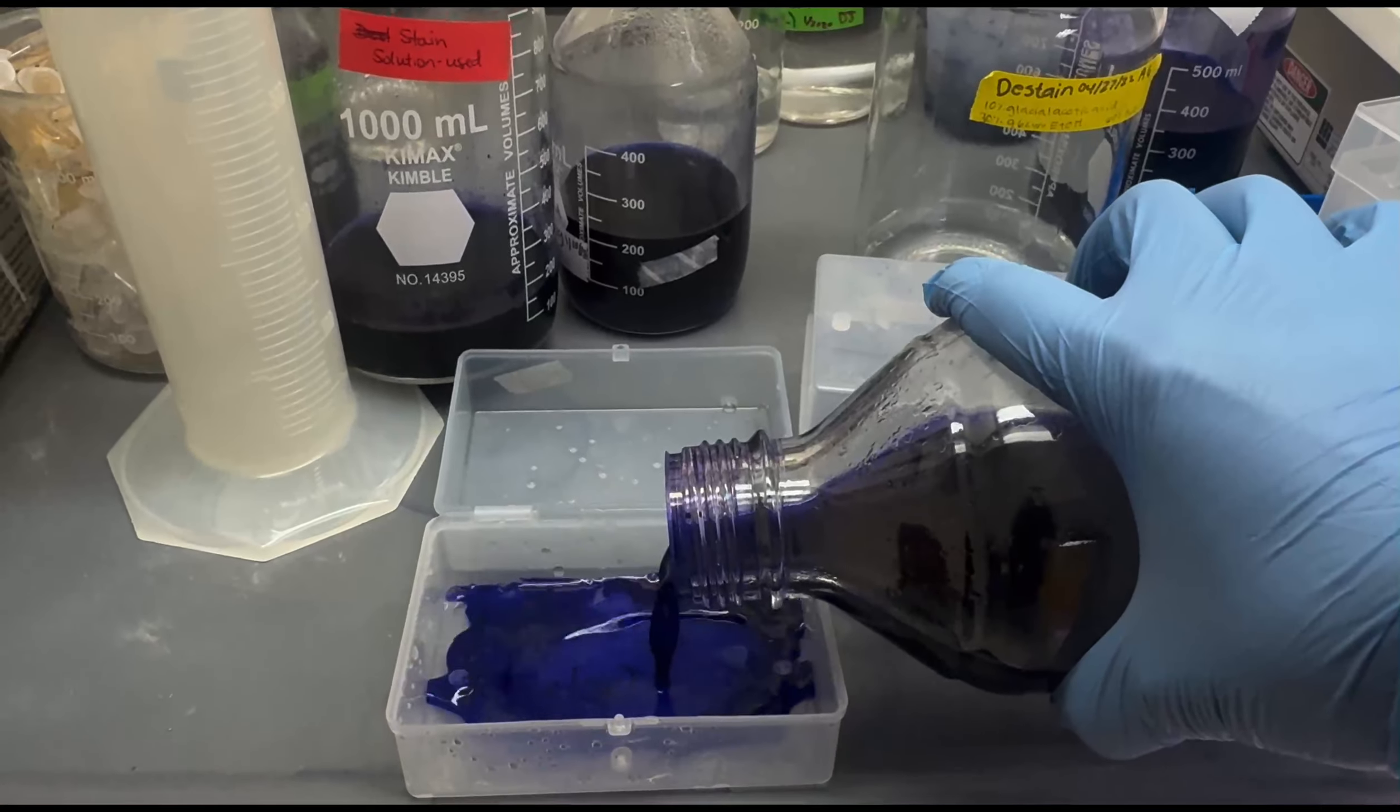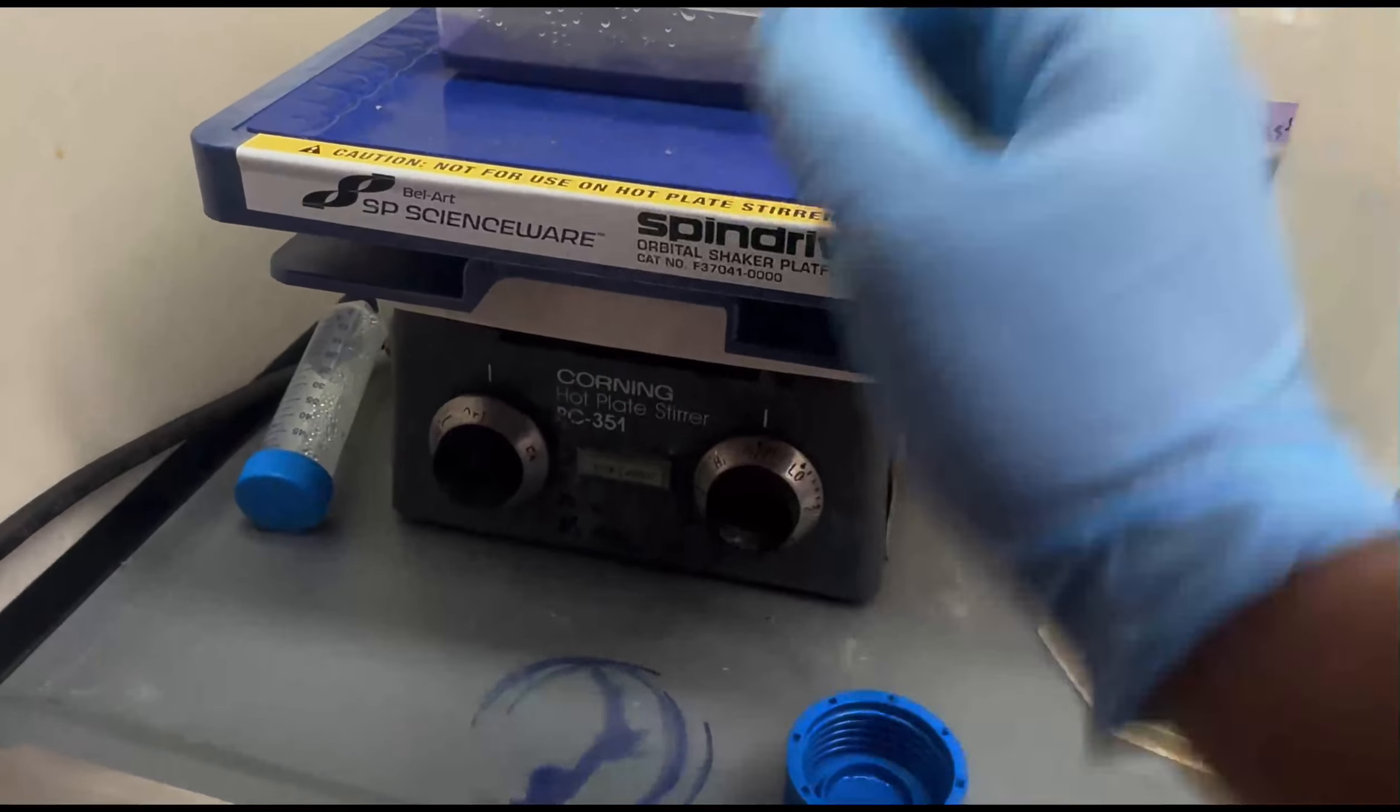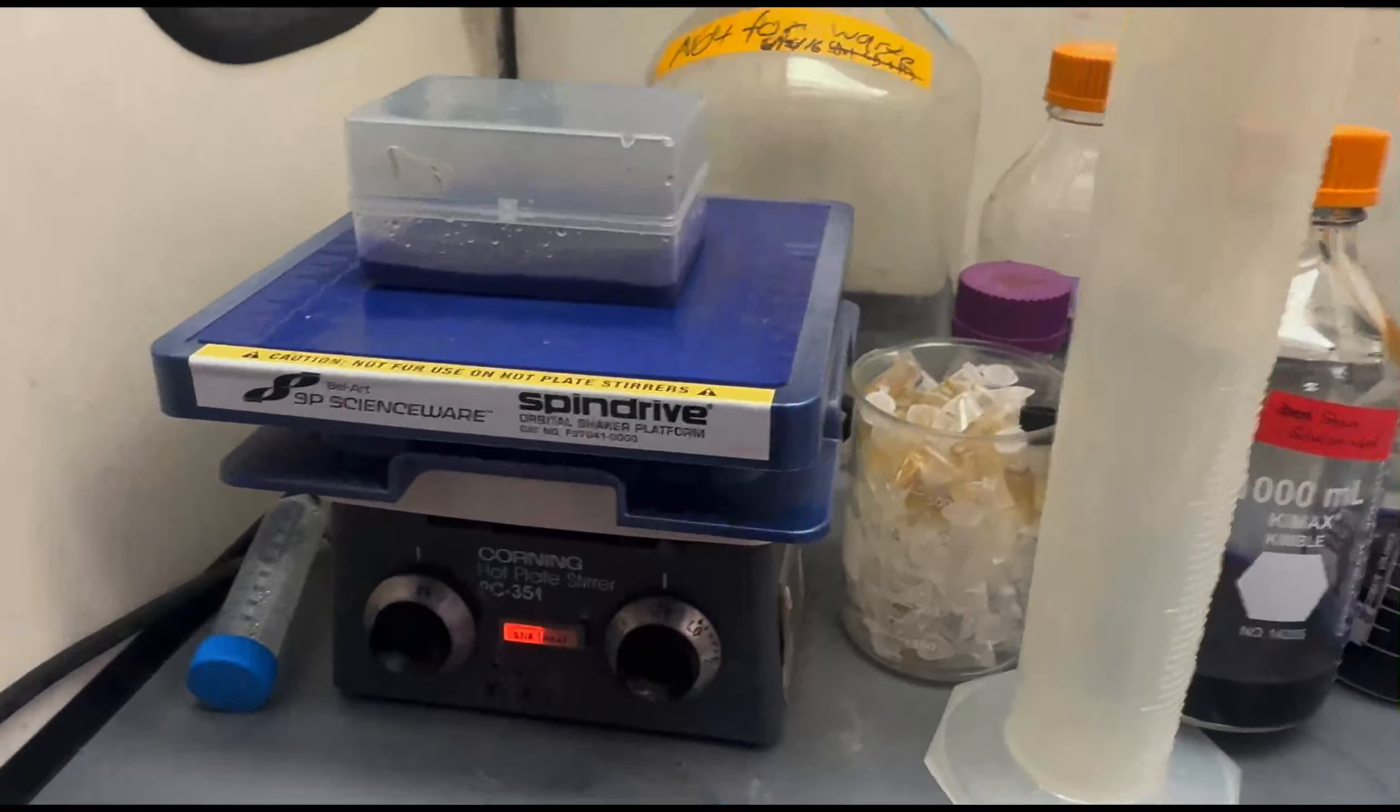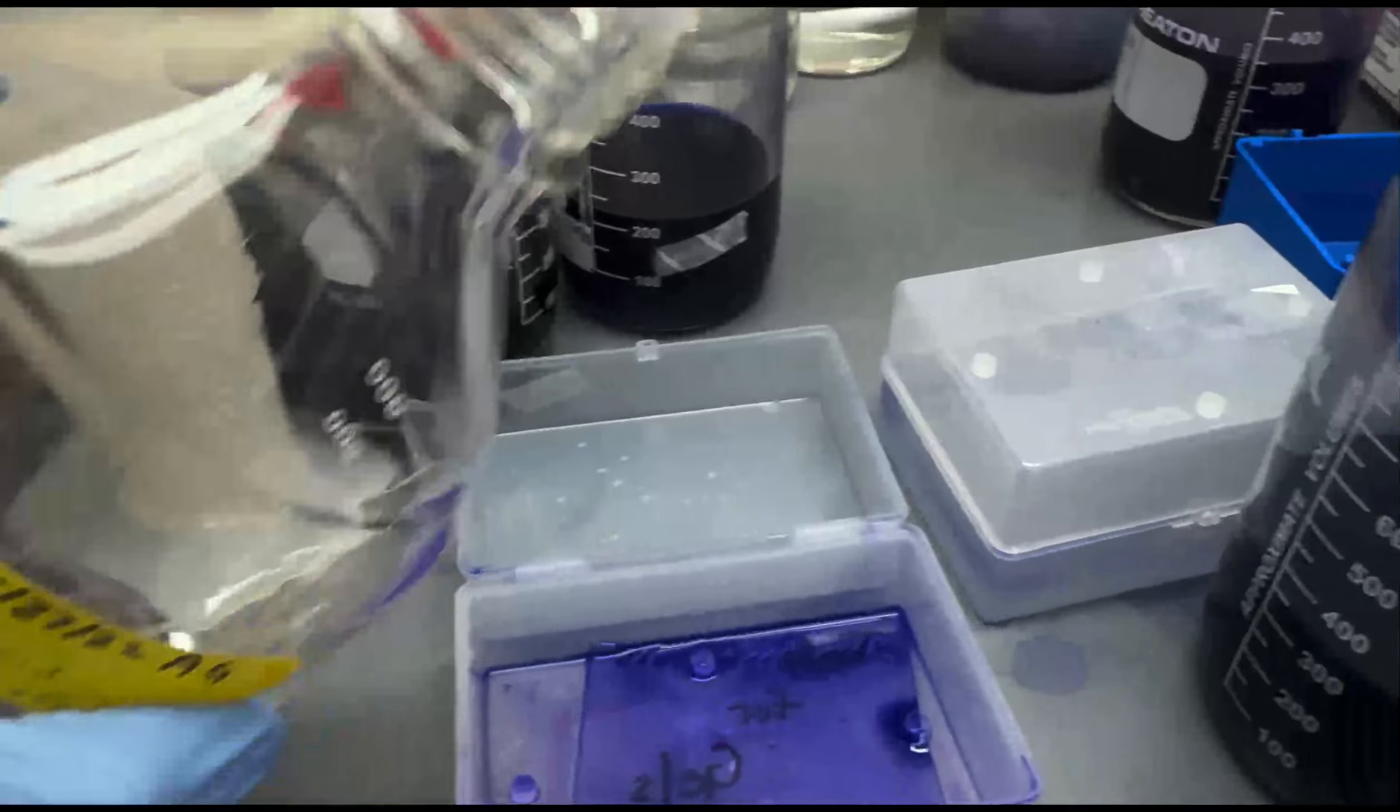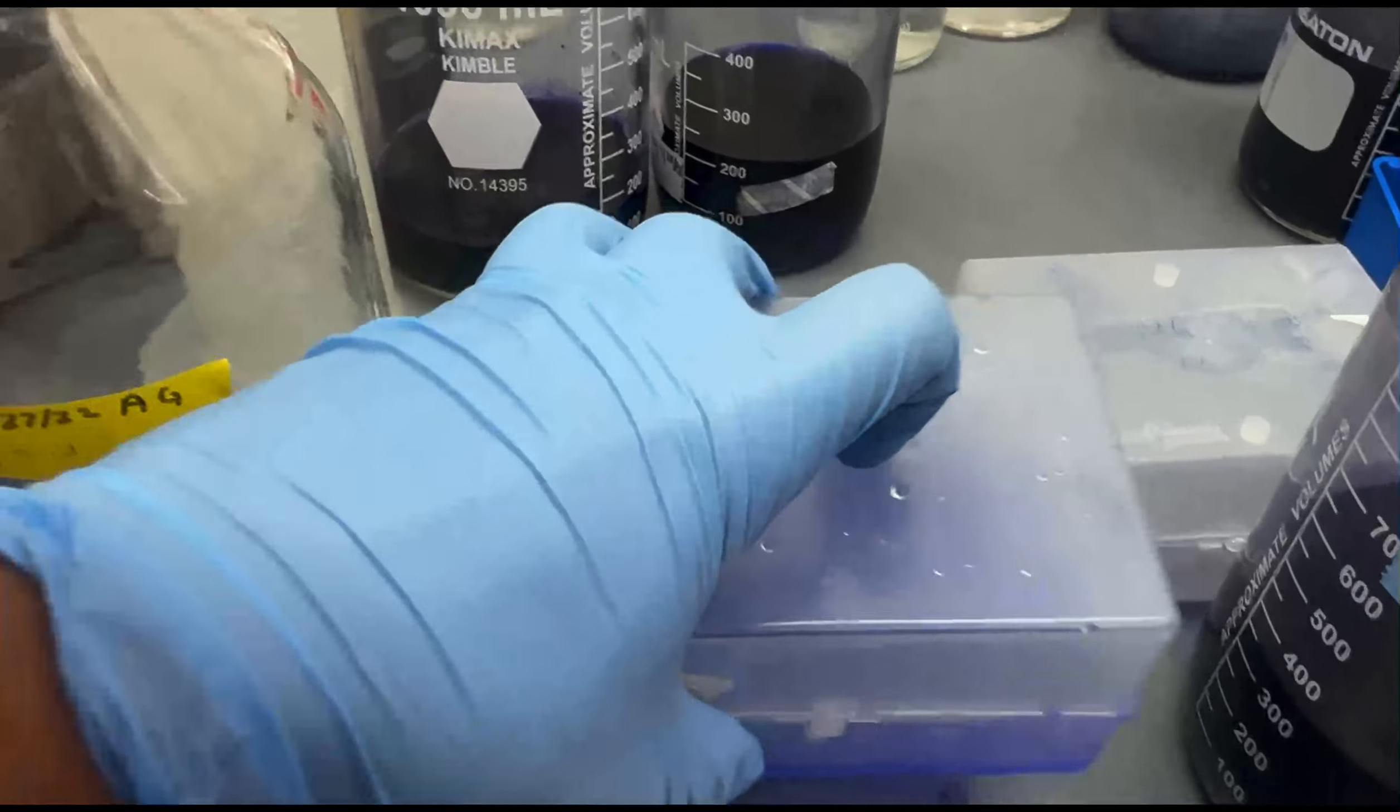After the DI rinse, the gel is placed in a Coomassie Blue solution for staining for about one hour with light shaking. Once complete, the gel is then washed with de-staining solution for at least four hours before the gel is ready to be visualized.